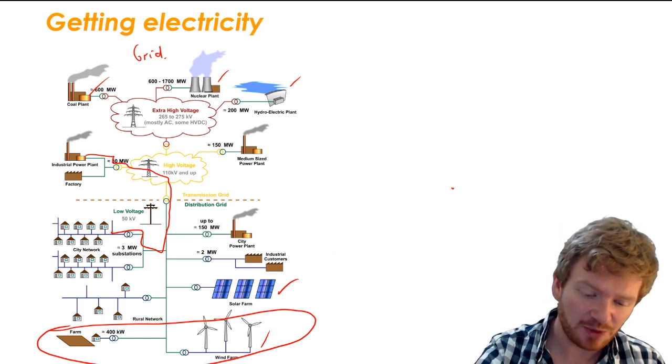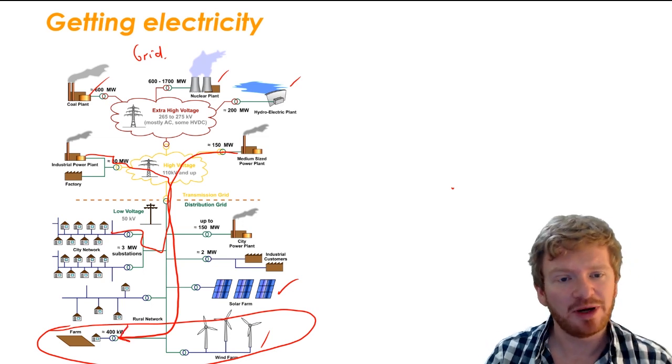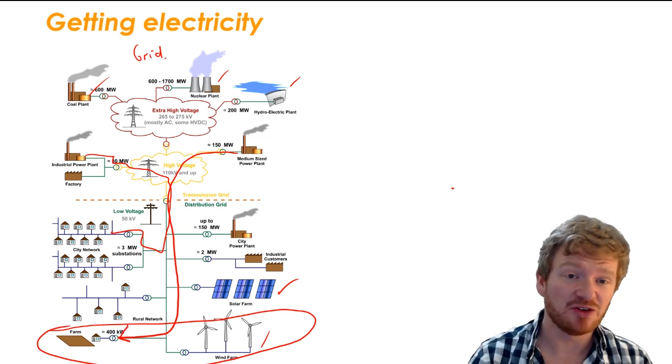Instead of that, we make a system so that when the wind isn't blowing, power can come from a nearby power station or even from a power station that's very far away.